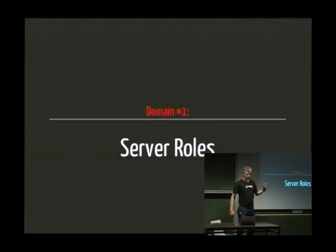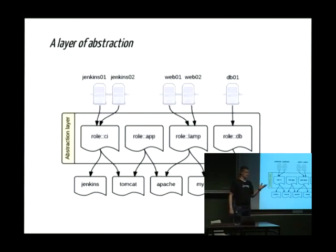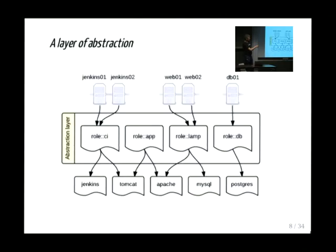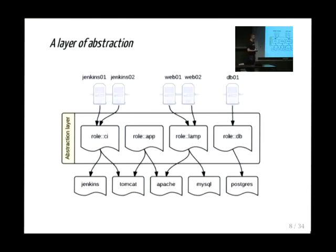I'm using server roles, which is a layer of abstraction. It's a bit similar to the Craigdunn roles and profiles methodology, but those are two levels of abstraction, which I find a bit too complicated. This is about creating a layer of classes and not including the classes that do the actual work directly on the machines you manage. For instance, if you have a role called 'lamp', the role_lamp class includes Apache and MySQL. In turn, web01 and web02 include role_lamp. So if I later want to make a change to all my LAMP servers, I just change that class and it applies to all web servers.